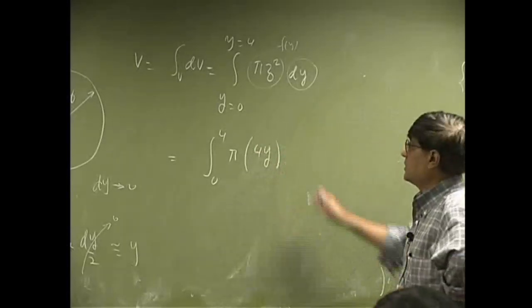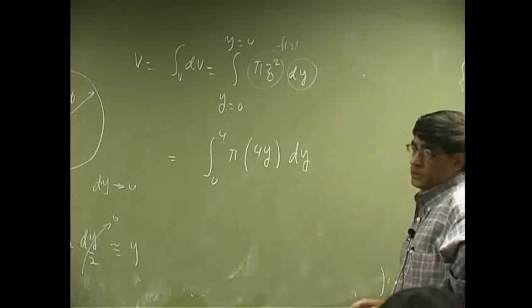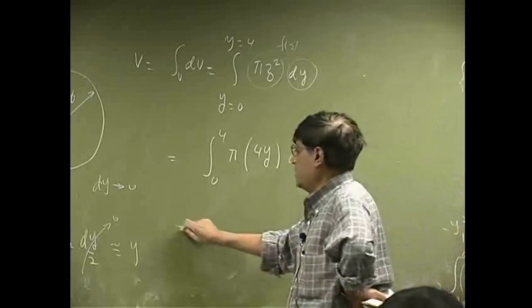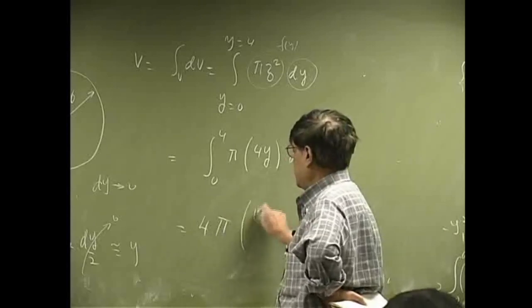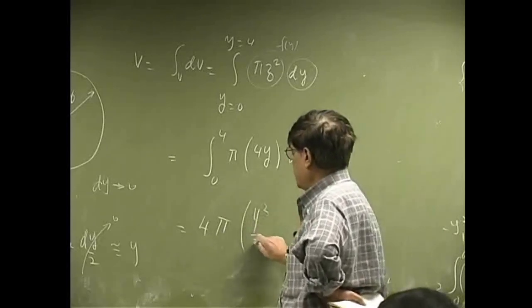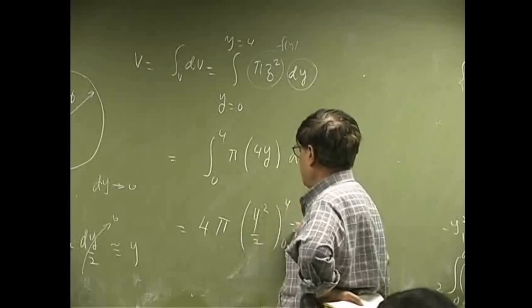So, we also know that z squared is 4y. So, you make that replacement, and you go with pi. So, you get 4 pi, then you have y dy. So, it's going to be y squared over 2 from 0 to 4.